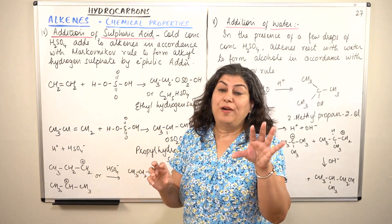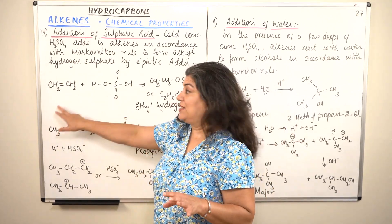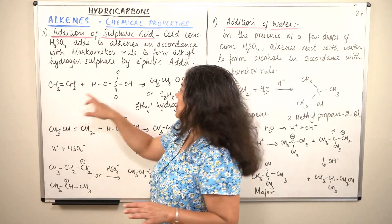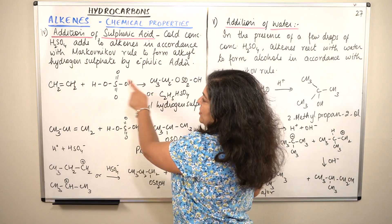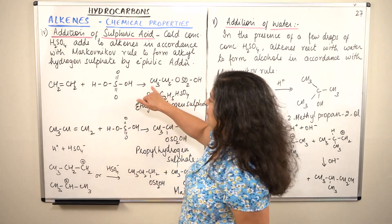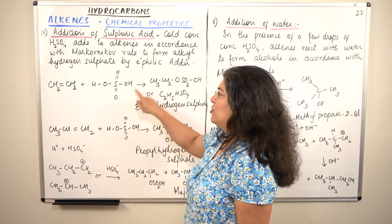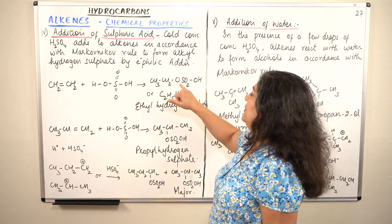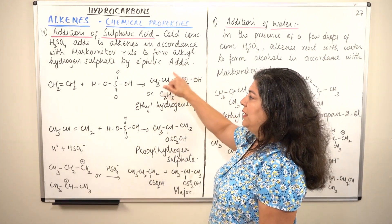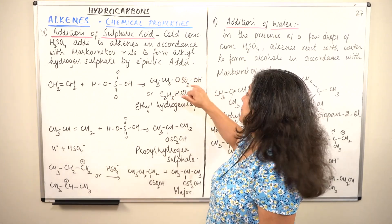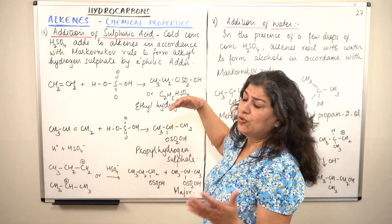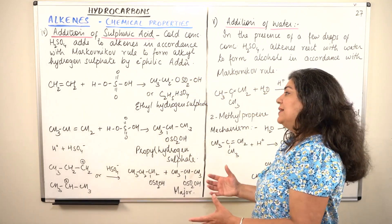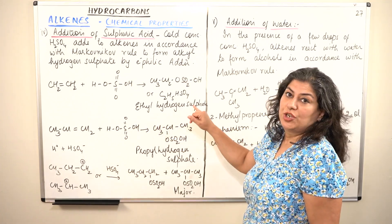The H⁺ will be the electrophile which attacks the alkene first. The H⁺ comes and adds to one of the carbons — let's say it adds to the first carbon, so this first carbon becomes CH₃. In the second step, the HSO₄⁻ (also called HSO₃OH) comes and adds to the second carbon, resulting in the formation of ethyl hydrogen sulfate.